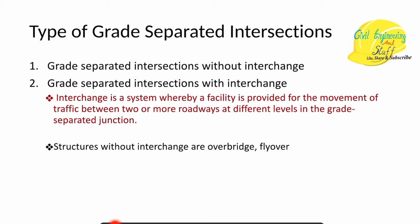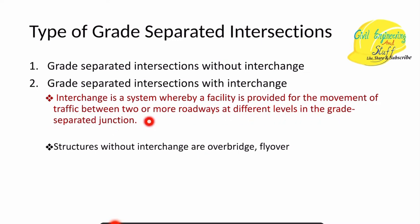There are two types of grade separated intersection: without interchange and with interchange. Interchange is a system where a facility is provided for the movement of traffic between two or more roadways at different levels in a grade separated junction.